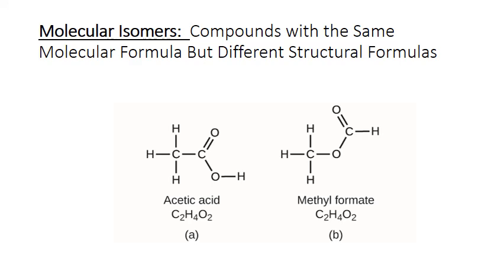Acetic acid and methyl formate are examples of two isomers. They both contain two atoms of carbon, four of hydrogen, and two of oxygen in their molecules. But the way those atoms are bound together is different. In acetic acid, one of those oxygen atoms is bound between a carbon and hydrogen, while in methyl formate that oxygen atom is found between two carbon atoms.